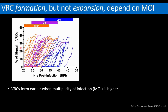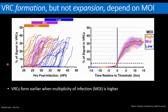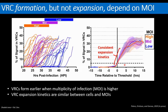We found that VRCs tended to form at earlier times post-infection when the MOI was higher. Individual traces of cells infected with high, medium, and low MOIs are shown in orange, violet, and blue, respectively. By 20 hours post-infection, many high-MOI cells had large VRCs, whereas many low-MOI cells did not form replication centers until after 30 hours post-infection. There is a lot of variability between cells, probably due to the asynchronicity of polyomavirus infections.